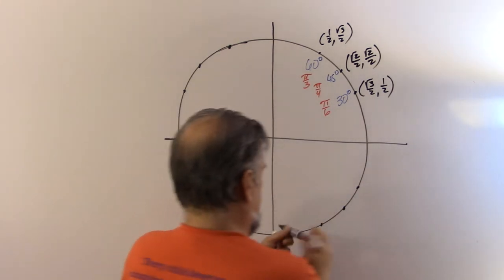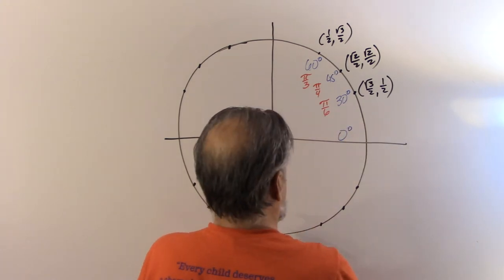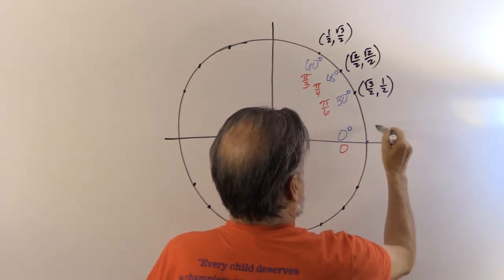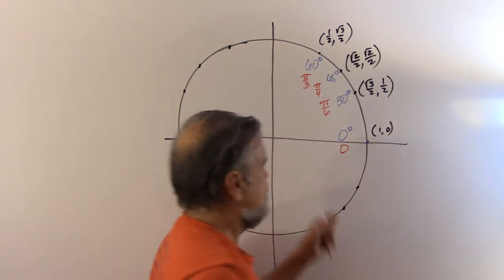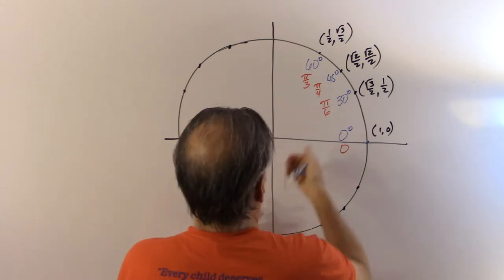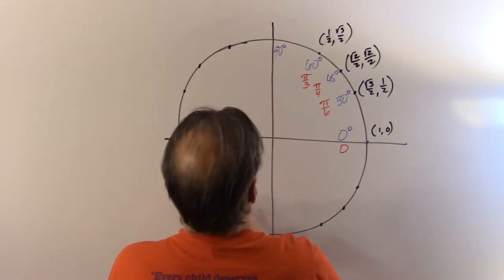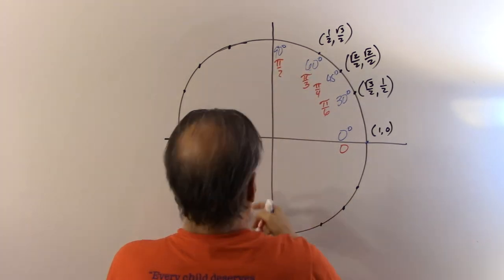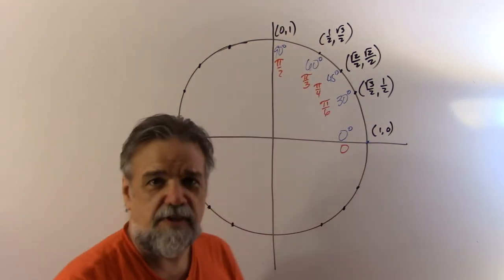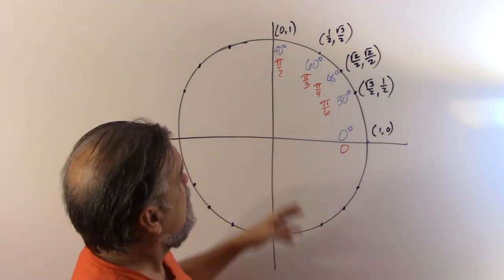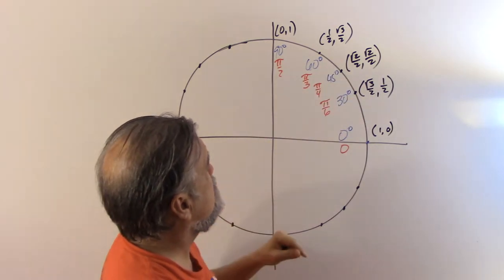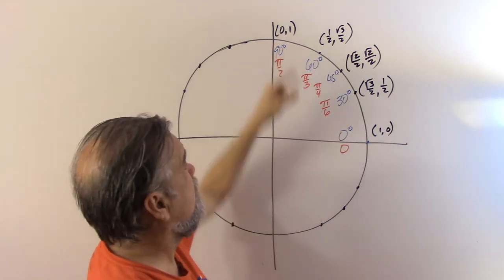We also have 0 degrees or 0 radians, which gives us the point (1, 0) — meaning the cosine of 0 is 1 and the sine of 0 is 0. And going up to 90 degrees, which is the same thing as π/2, that gives us the point (0, 1). So we know quite a bit about the first quadrant: the sine and cosine of 30°, 45°, 60°, and also 0° and 90°.